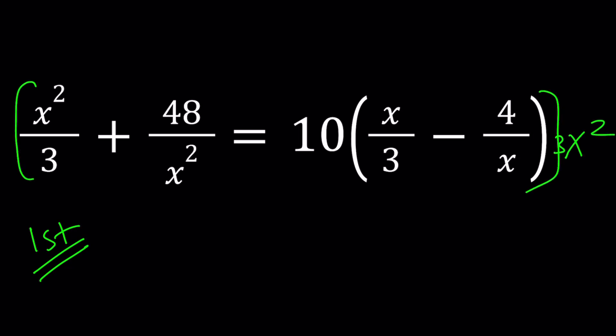So when you multiply this by 3x squared, the 3 is going to cancel out. You're going to get x to the 4th. When you multiply this by 3x squared, x squared is going to cancel out. You're going to have 48 times 3, which is 144.